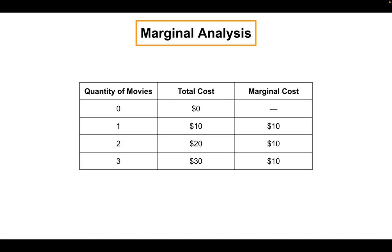With an example: we have the quantity of movies and how much it costs to go. A movie ticket is $10, so you'll notice the marginal costs are all the same. The change in the total is your marginal — every time I'm adding 10. I can add up marginal costs to get total cost: if I wanted the total cost of three movies and was given the marginal cost, I add them up: 10 plus 10 plus 10 is 30.